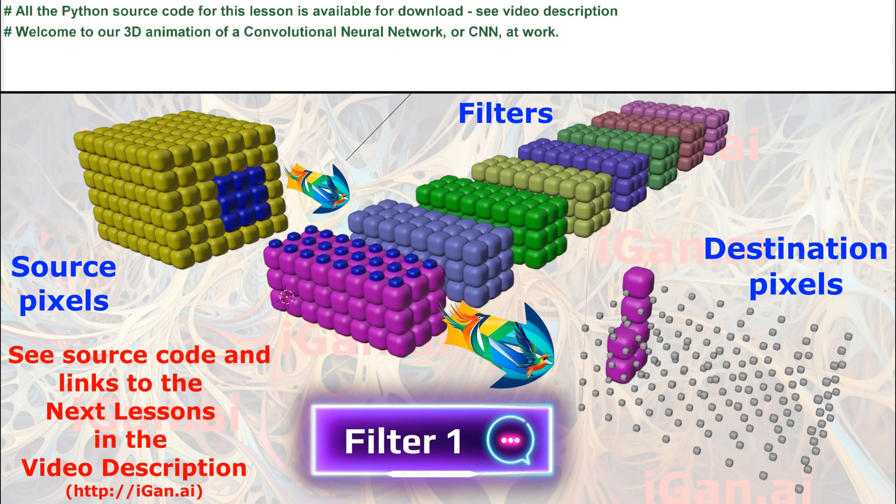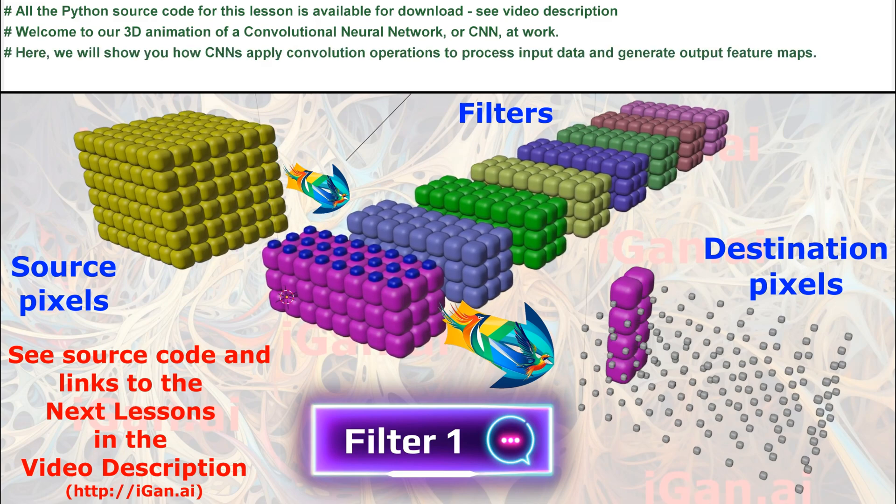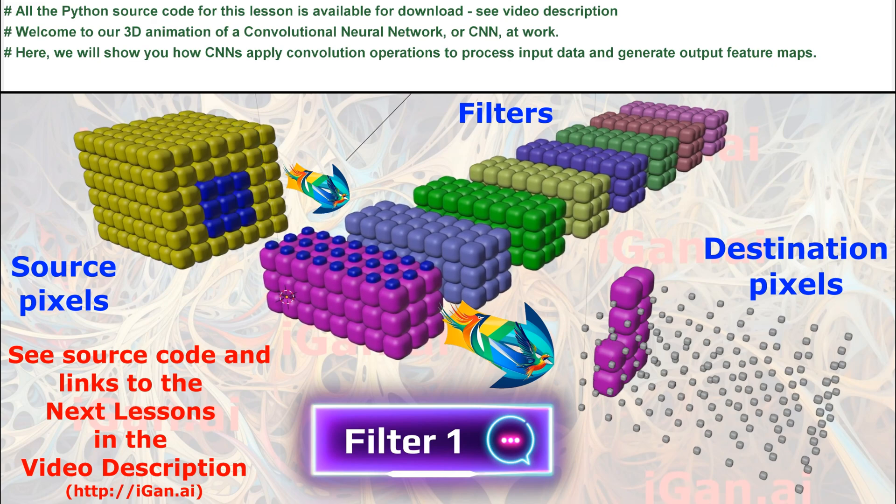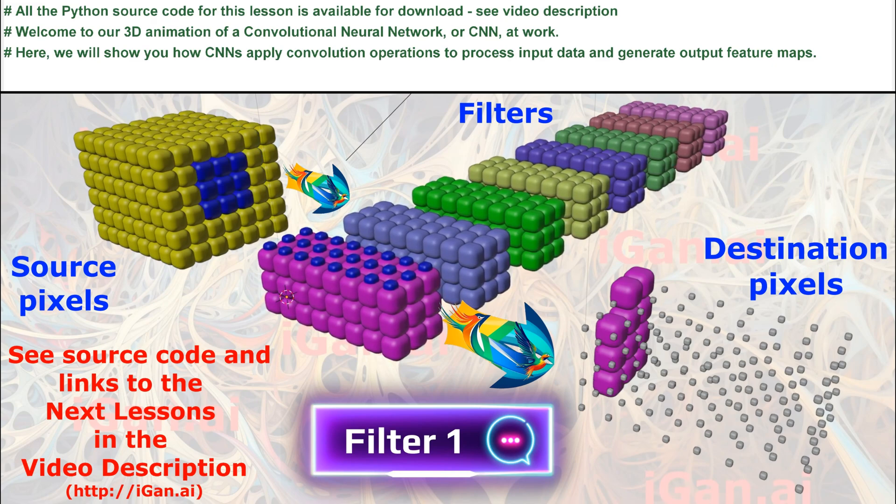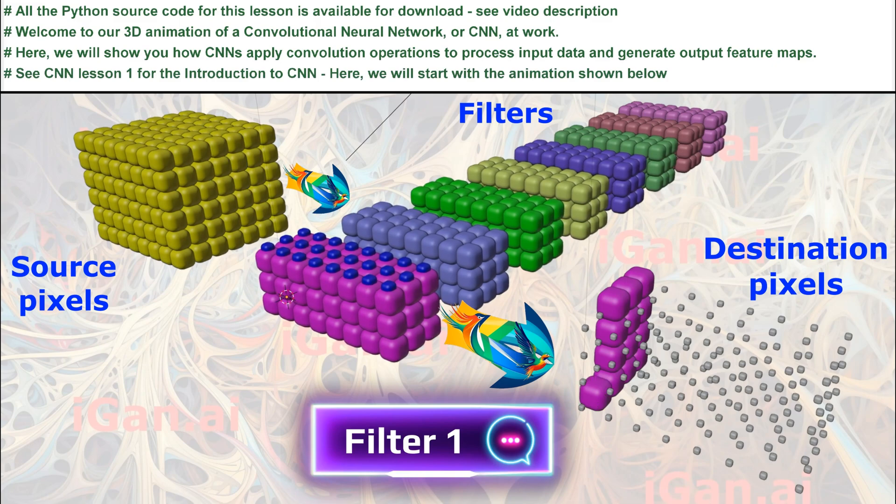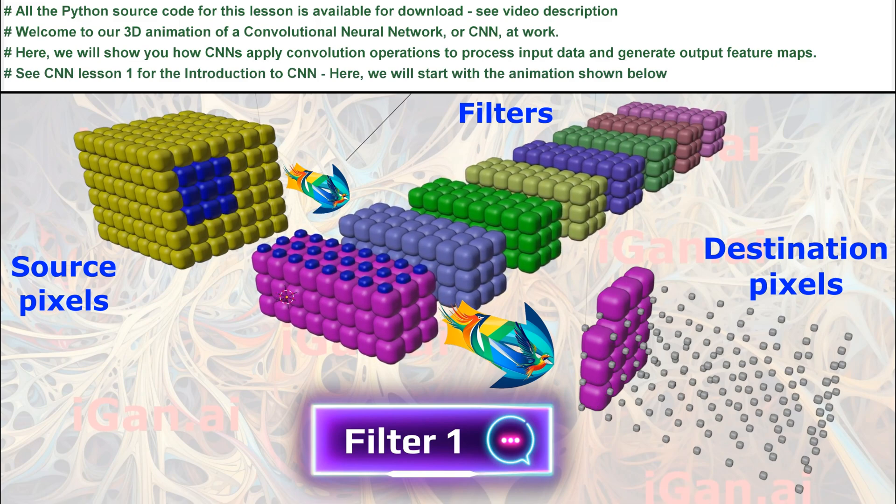Welcome to our 3D animation of a convolutional neural network, or CNN, at work. Here, we will show you how CNNs apply convolution operations to process input data and generate output feature maps.